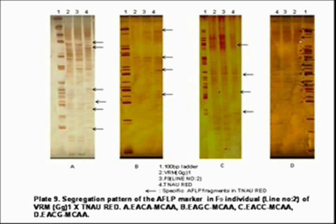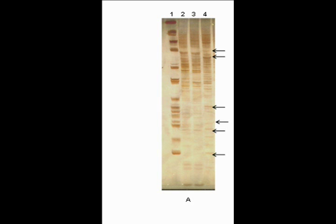This is the AFLP gel photo. Number 1 represents the 100 base pair ladder. Number 2 and number 4 are the parents, that is VRM and TNAU Red. Number 3 represents the F9 population. Using AFLP, we are finding to which parent the F9 population resembles. The arrow mark represents the band which is present in TNAU Red, lane number 4, but not in the F9 population, lane number 3. The F9 population resembles VRM, lane number 2, since the bands match each other.